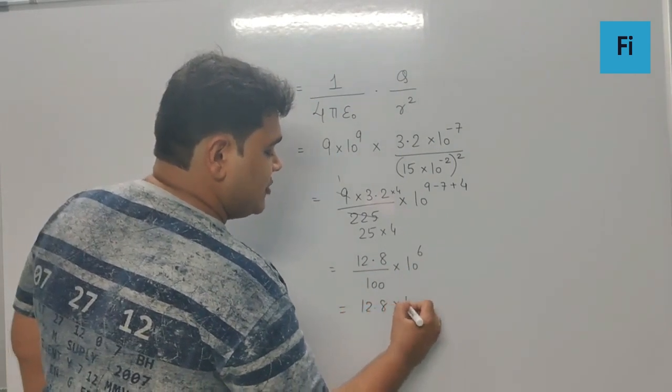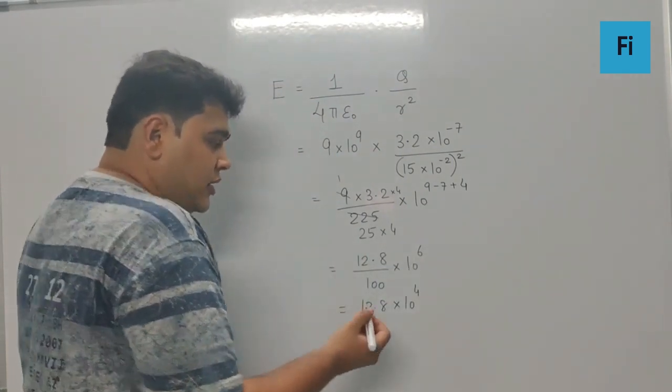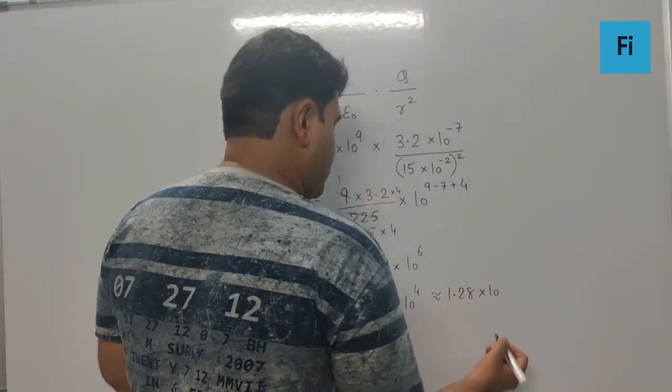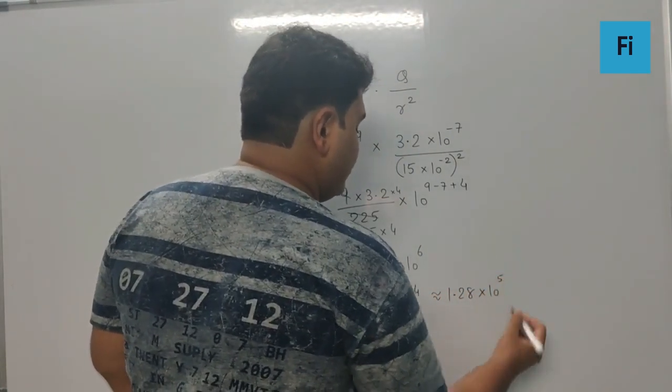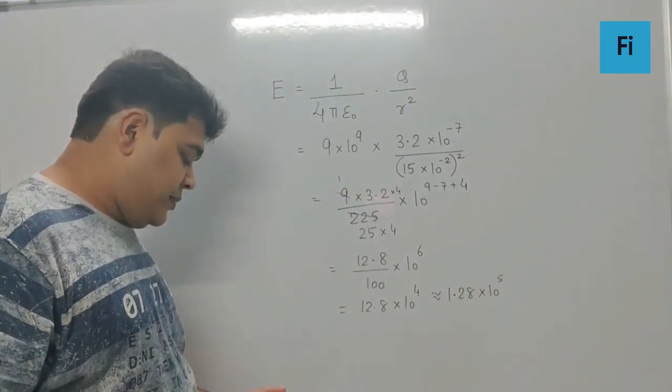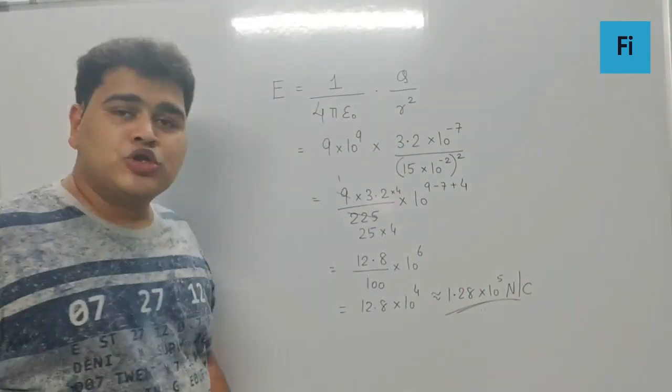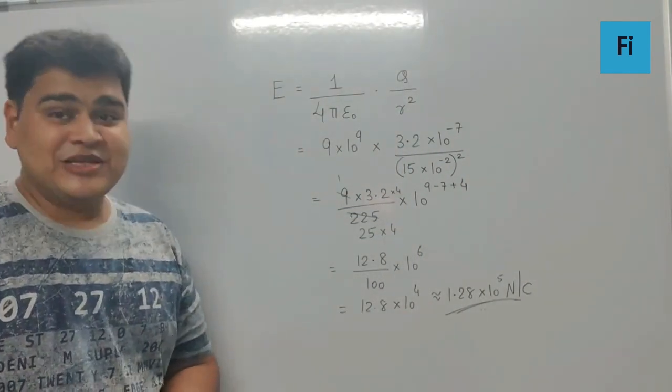We get the final answer 12.8 into 10 raised to 4, which we can rearrange as 1.28 into 10 raised to 5 newton per coulomb as per the given option. So this will be our final answer.